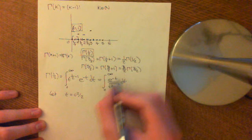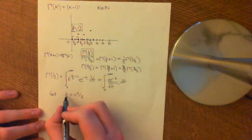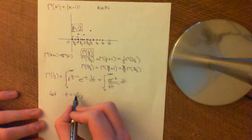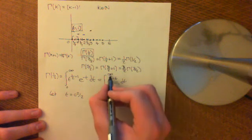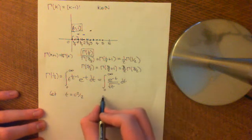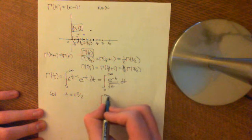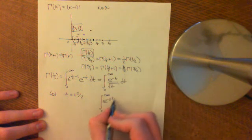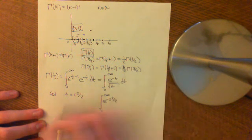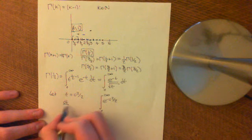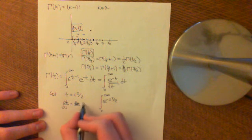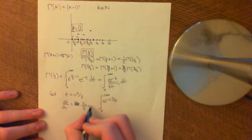If we make that substitution — let t equal u squared over 2 — then if t is equal to zero, that implies u is equal to zero, and if t is equal to infinity, that implies u is equal to infinity. So the altered limits are still zero to infinity. We put in e to the negative u squared over 2, and we need to replace dt. So dt/du is equal to 2u over 2, which is just equal to u.